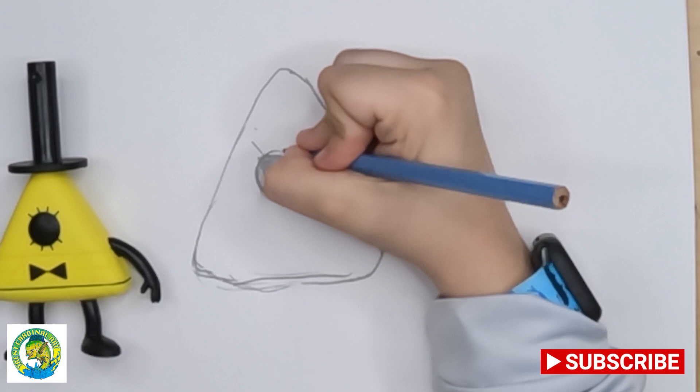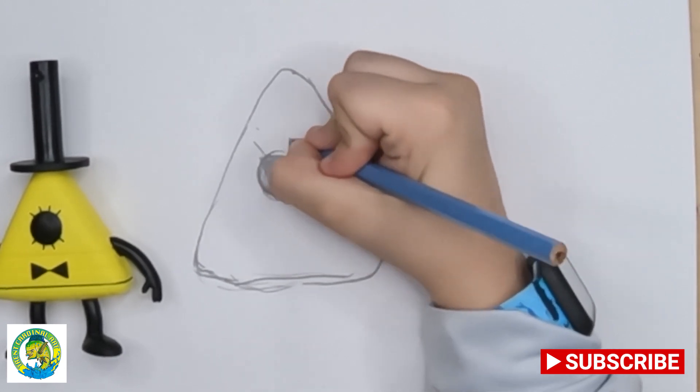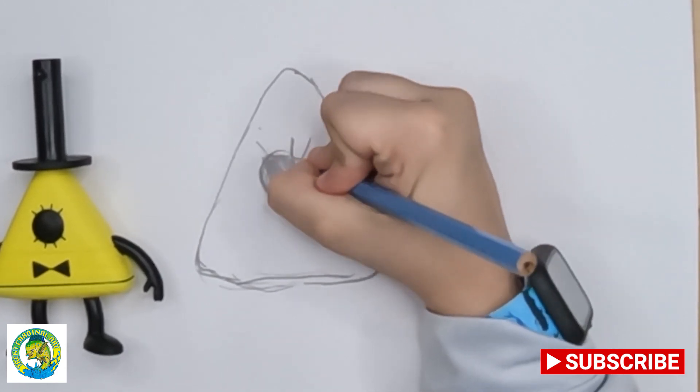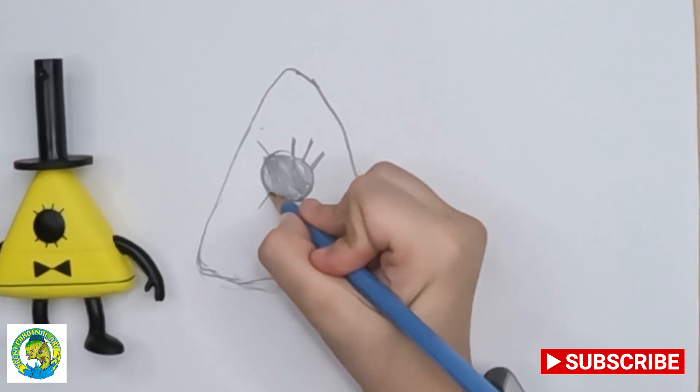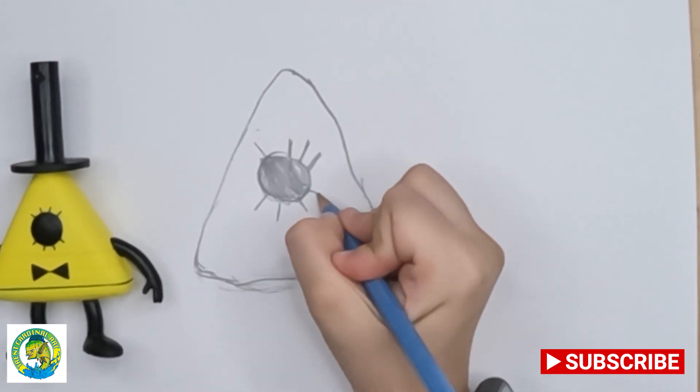Then you're going to draw lines around the eye. One, two, three, four on each side.